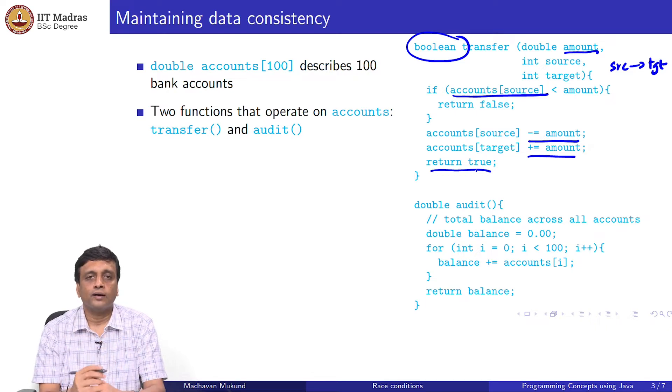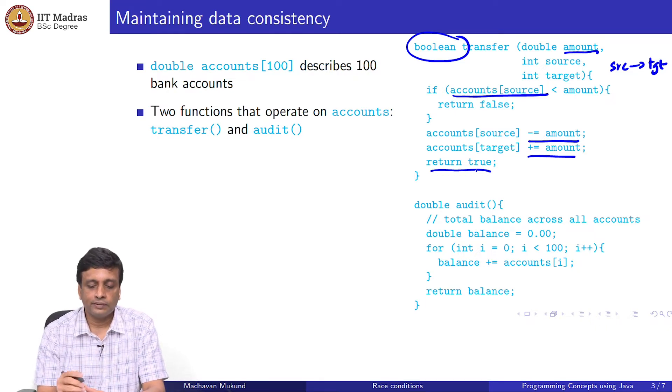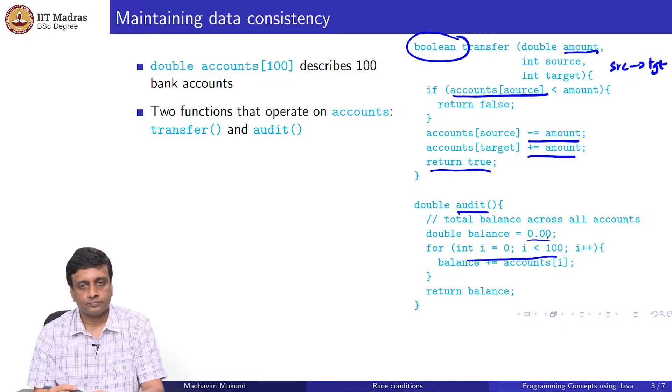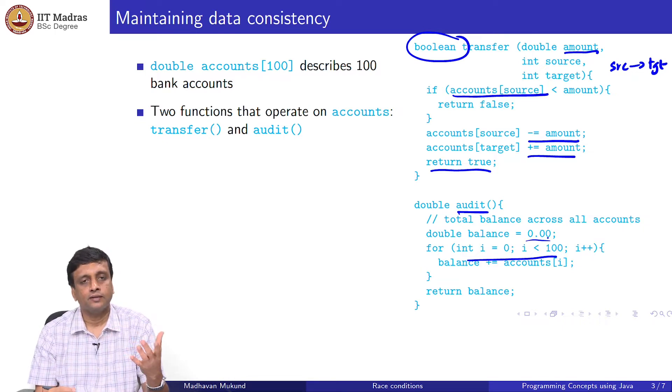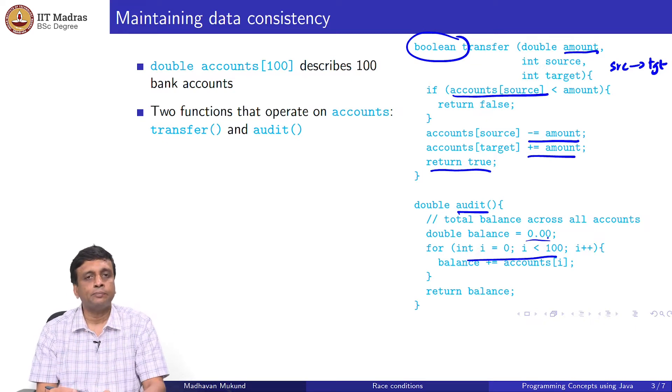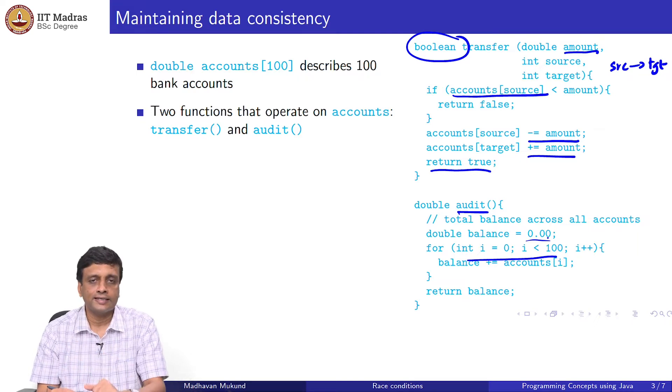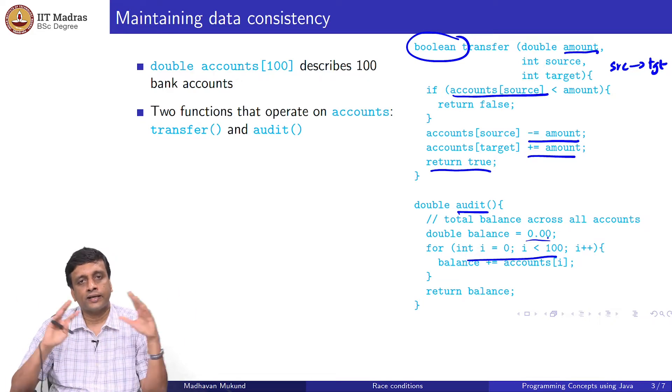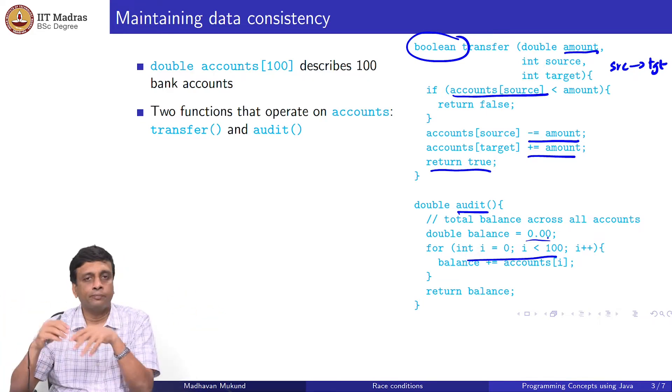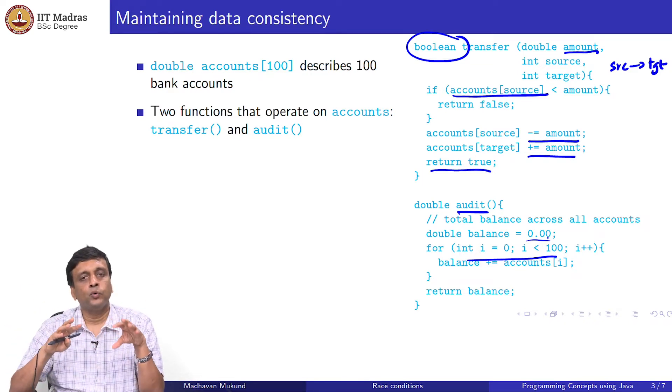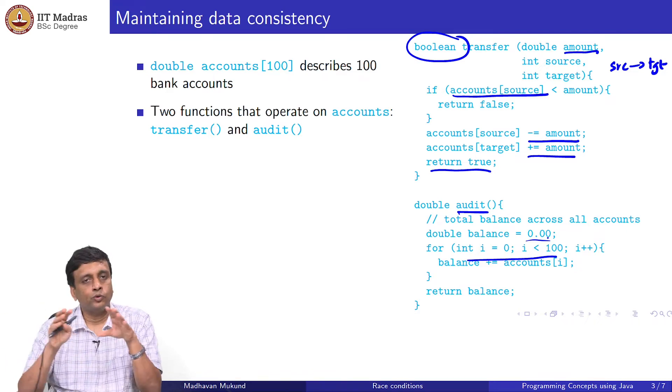The other function is more a status check, something which I am calling audit. What it does is it runs through all 100 accounts and adds up the balance. It takes the sum of the balance from account 0 to account 99.